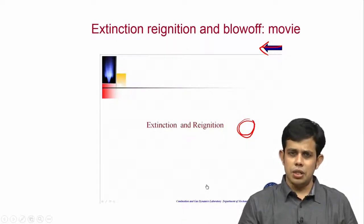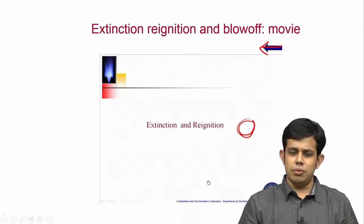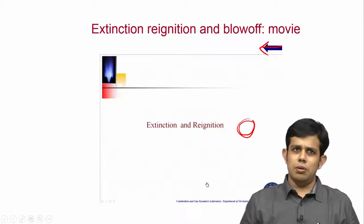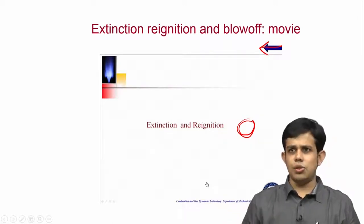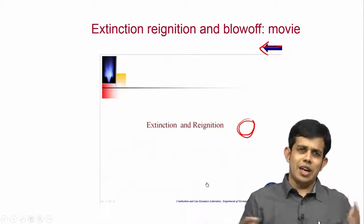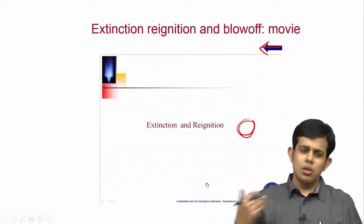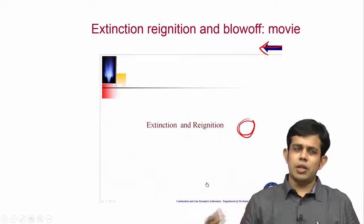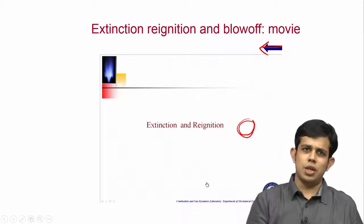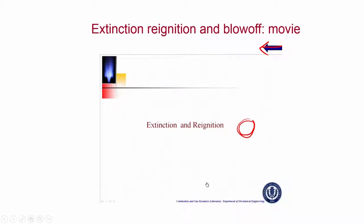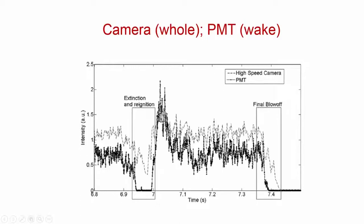Just prior to the final blow-off event we have this extinction re-ignition event where the flame essentially goes into the recirculation zone, but somehow it manages to reignite and become like a normal flame for some extent — though characterized by more unsteadiness than a normal flame. Eventually it goes off, succumbing to too much extinction along the shear layers. The flame retracts into the recirculation zone and then finally blows off. In a time series, when we have this extinction re-ignition, the PMT almost sees nothing focused downstream, whereas the camera captures signal due to chemiluminescence emission from the recirculation zone.